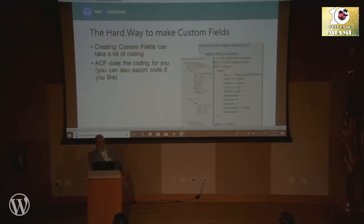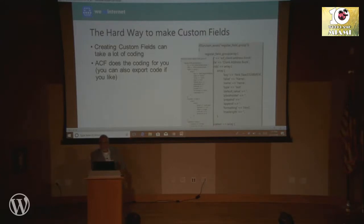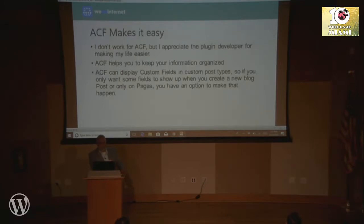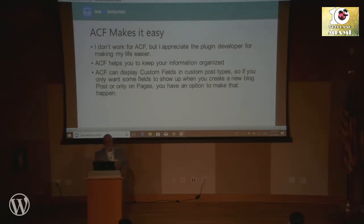This is the way custom fields are usually made in WordPress — you have to hand-type and hand-code everything you see here on the screen for each custom field. ACF does the coding for you. And if you even want the code, you can set it up in ACF and then export the code as well using the plugin. I don't work for ACF, but I really do like the plugin. It helps you keep your information organized, and you can display it in different custom post types.